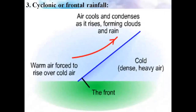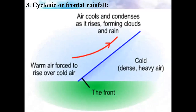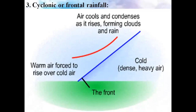The third type is cyclonic, or frontal, rainfall. It occurs in regions where cold air mixes with warm and moist air. In the tropical region, it is associated with cyclones, while in the temperate region, it is associated with depression. The place where the two air masses meet is called a front.